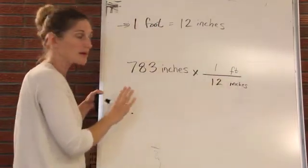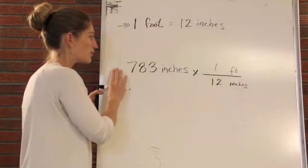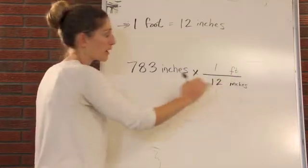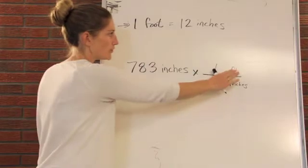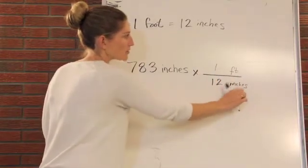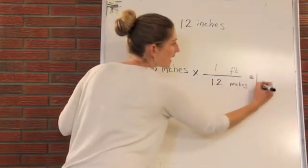Now we do this because when we run our calculation, we go from left to right and down. So it's going to be 783 inches times one foot divided by 12 inches. And that's going to give us an answer.